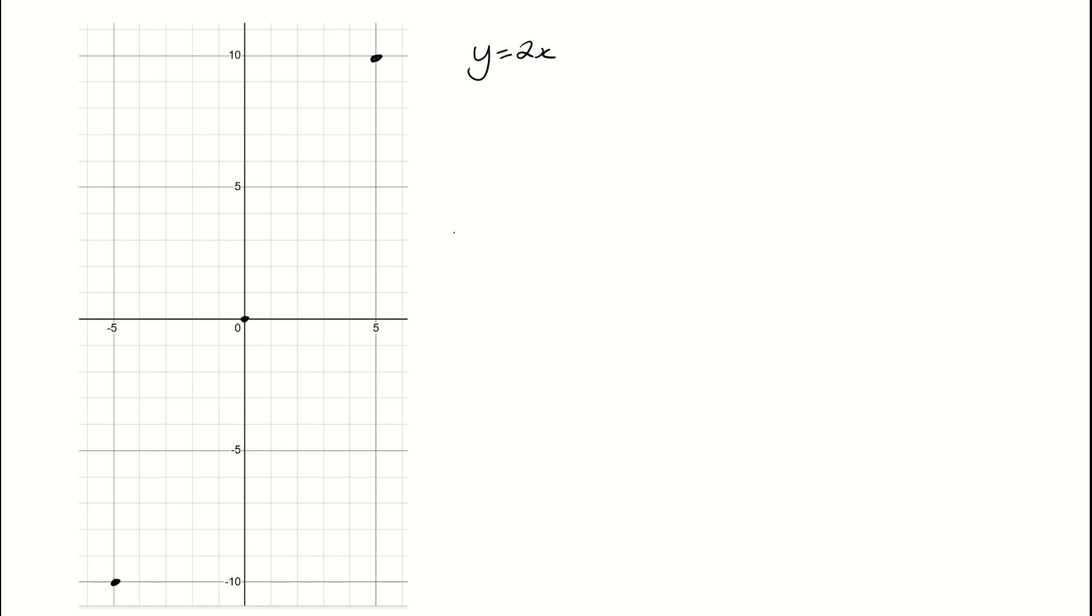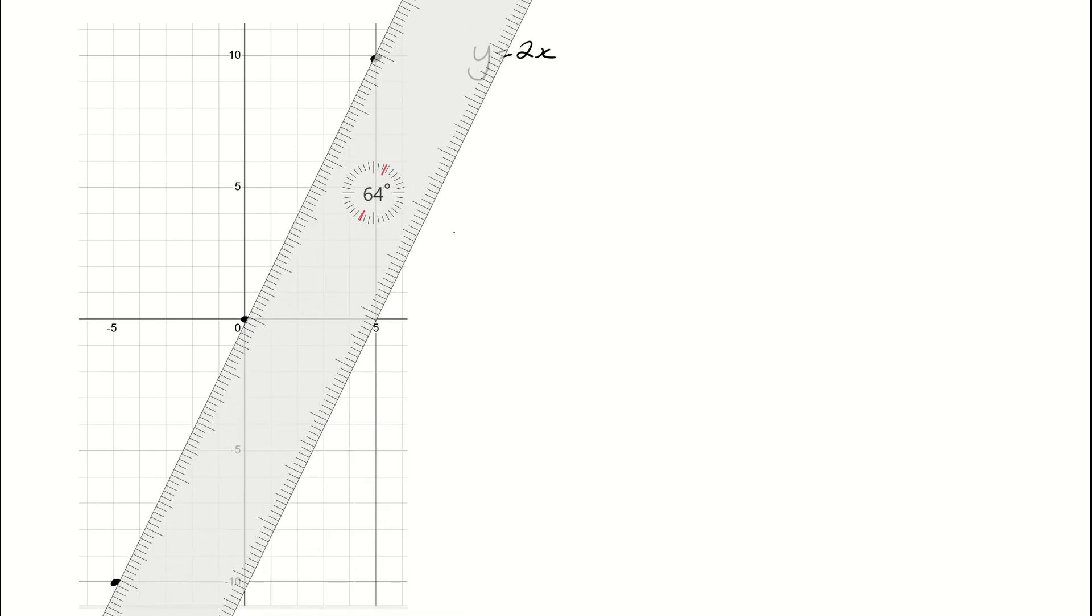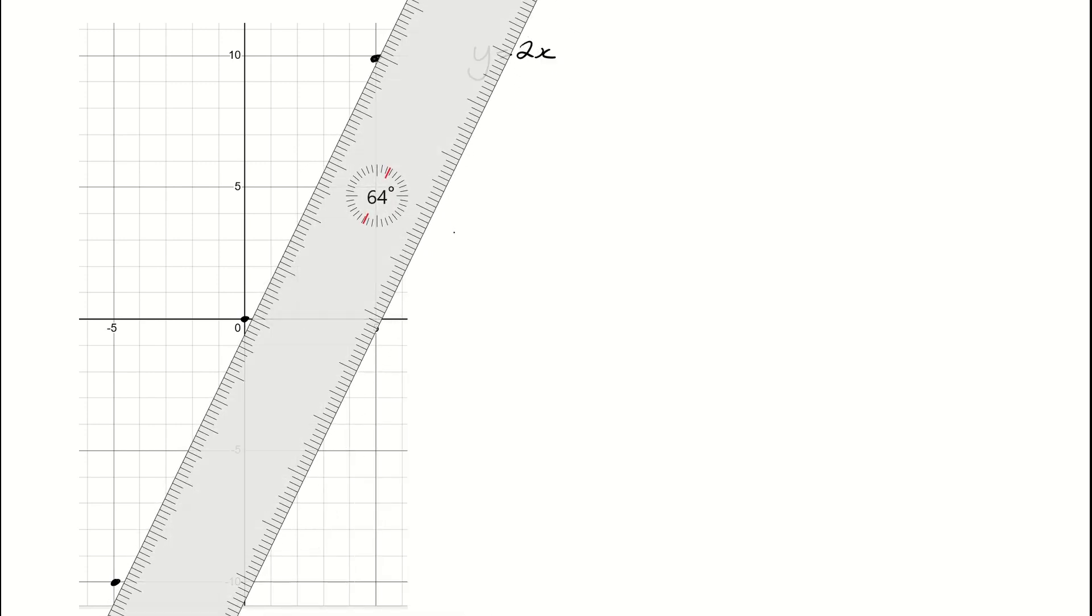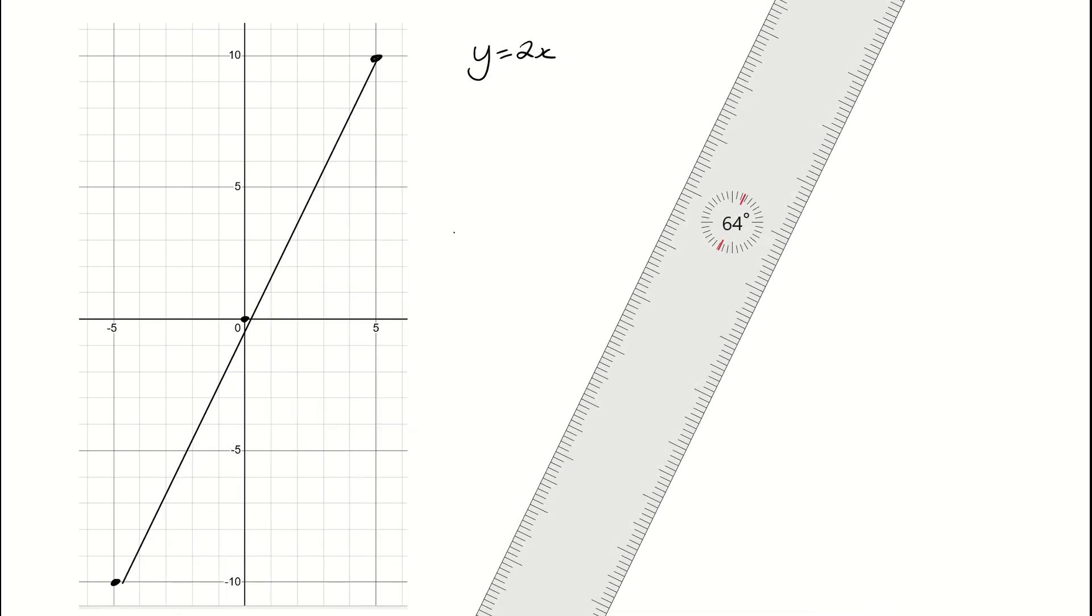And then I can get a ruler out and I can connect these dots. So we'll bring a ruler out over to here and I can connect these dots here and we get roughly what the y equals 2x line looks like.